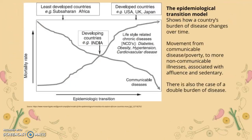The epidemiological transition model shows how a country's burden of disease changes over time as it becomes more developed. It describes a movement from communicable diseases, which are more prevalent in least developed countries.